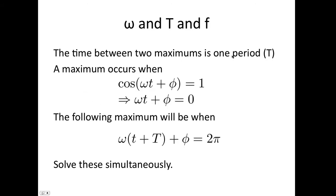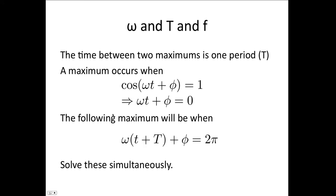Well, the time between two maximums is one period. When we travel from one maximum point to another maximum point, it takes the time T. The maximum positions occur when cos(ωt + φ) equals 1. So the first maximum we can say is when ωt + φ equals 0, because that satisfies this equation here. Now the following maximum will occur 2π radians later.